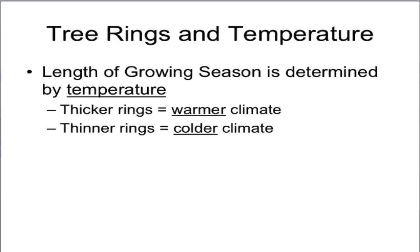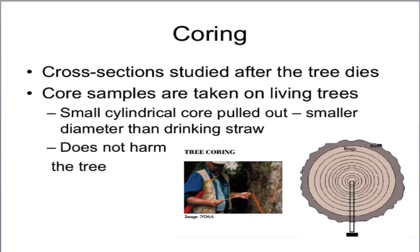As I stated earlier, tree rings can also indicate changes in temperature. Thicker tree rings might indicate warmer or warmer-than-normal climates, whereas thinner tree rings might indicate cooler-than-normal conditions. There are a couple of ways to actually study tree rings. One is studying the entire cross-section — the entire tree stump — which is usually done after the tree dies. Or, if you can't wait, you can take a core sample on living trees. It's just a small cylinder that goes into the tree, then they pull out the core. It doesn't harm the tree at all — it usually just fills in the hole as it grows — and then we can get the data right away.